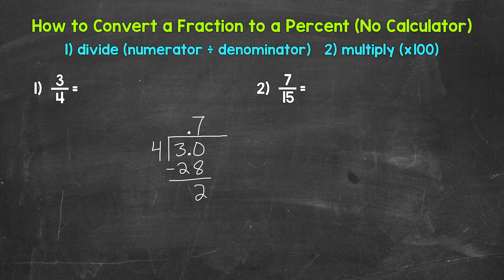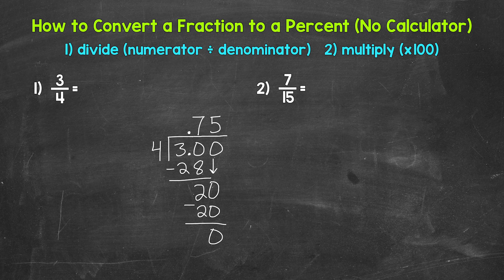Now we don't have a clean cut zero at the bottom there. So we can use another zero that we can bring down in order to continue the problem. So now we have 20. 20 divided by 4, which is 5. So let's put our 5 up here. Then multiply: 5 times 4 is 20. Subtract: 20 minus 20 is 0. So we went all the way through our division problem and we have that clean cut zero at the bottom, so we are done.